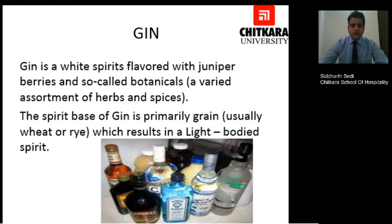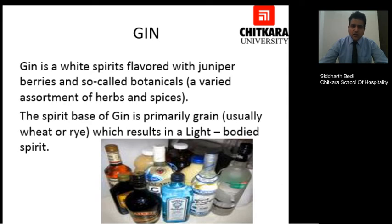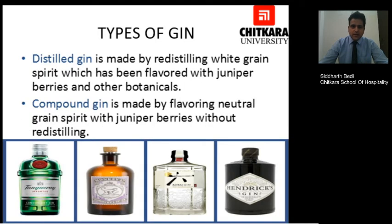Moving forward, we are talking about gin. Gin is synonymous with tonic water — gin and tonic happens to be one of the most world-famous combinations. Gin is a white spirit flavoured with juniper berries and botanicals. Botanicals are those herbs and spices which are rarely available to us in nature. The spirit of gin is primarily grain — usually wheat or rye — which gives a light-bodied spirit. Gin happens to be colourless. There are two basic types: distilled gin, which involves redistilling the white grain spirit flavoured with juniper berries and other botanicals.